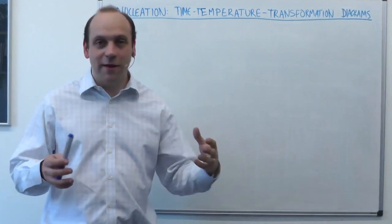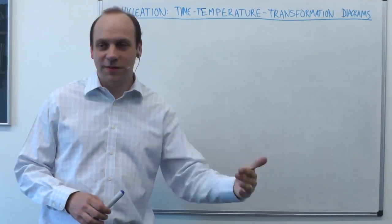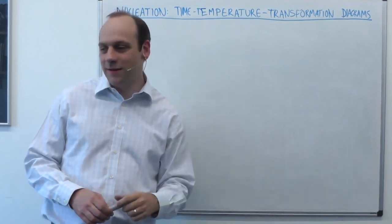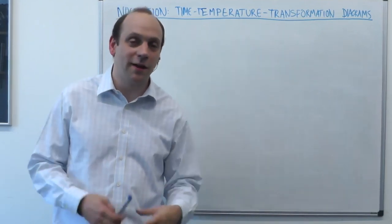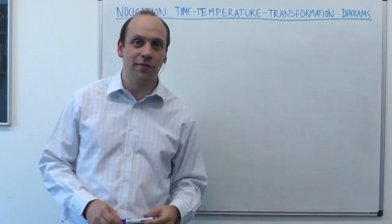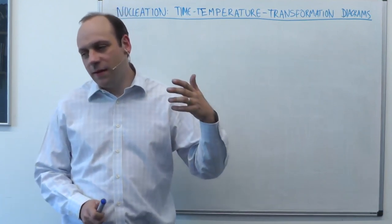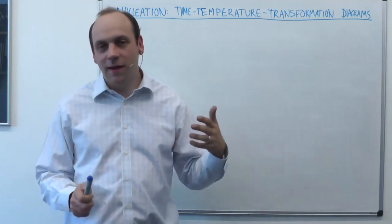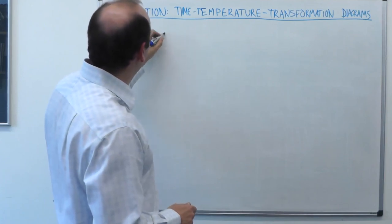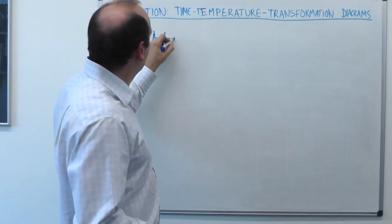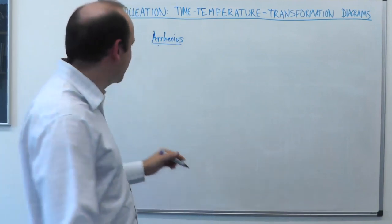Previously, we determined there would be an energy barrier W* — a barrier to the nucleation of a precipitate — and we'd require a pre-existing nucleus of size R*. We thought about how R* would vary with temperature; we'd require some supercooling to have an R* small enough for nucleation to occur. We can consider the occurrence of critical nuclei to be a so-called Arrhenius process.